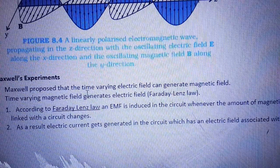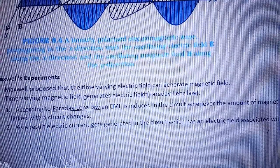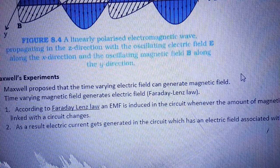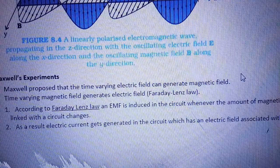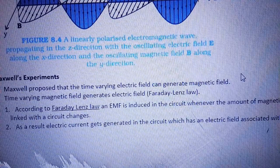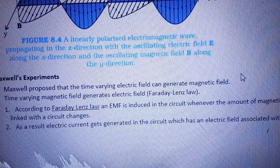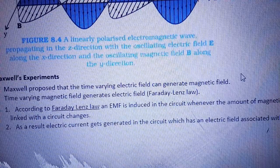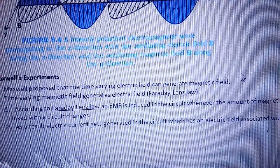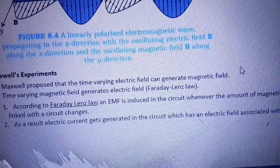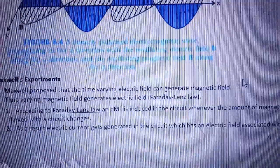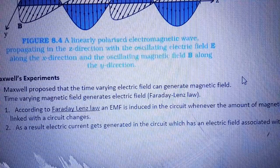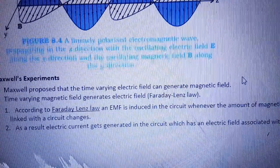Maxwell proposed that a time-varying electric field can generate a magnetic field. हम लोग पहले पढ़ चुके हैं कि अगर हम charge को flow करवाते हैं तो वहाँ पर electric field as well as magnetic field दोनों ही produce होते हैं। और Faraday's law और Lenz's law से हमें पता चला है कि time-varying magnetic field generates electric field, और electric field को change करते हैं तो magnetic field भी produce होता है।